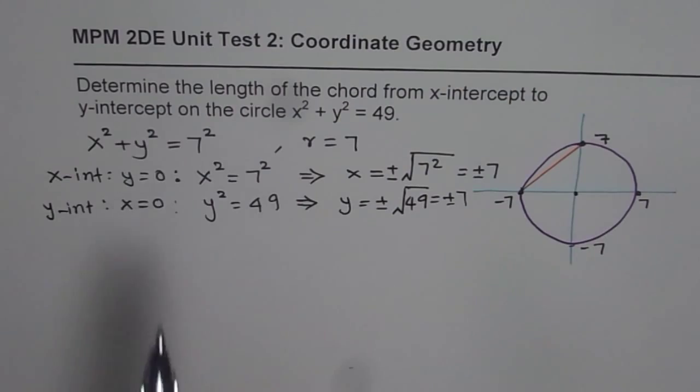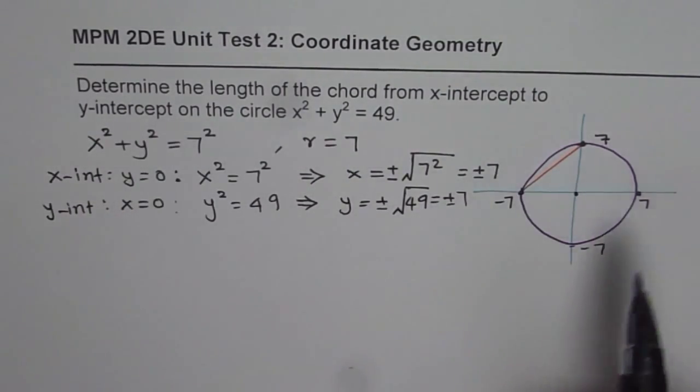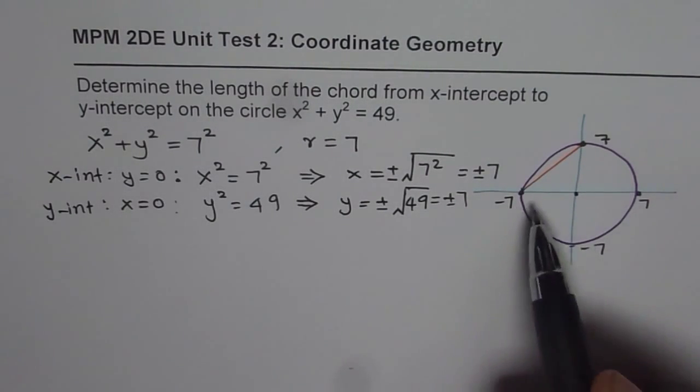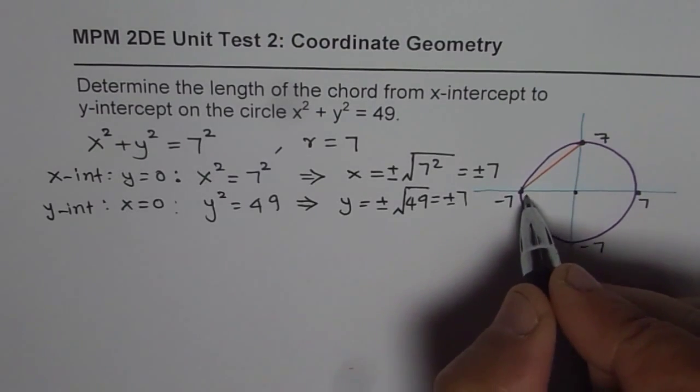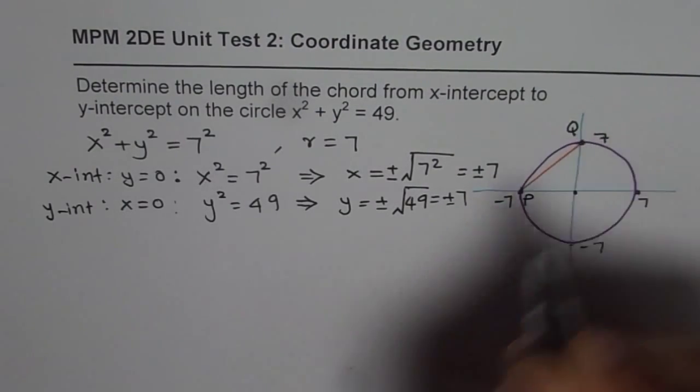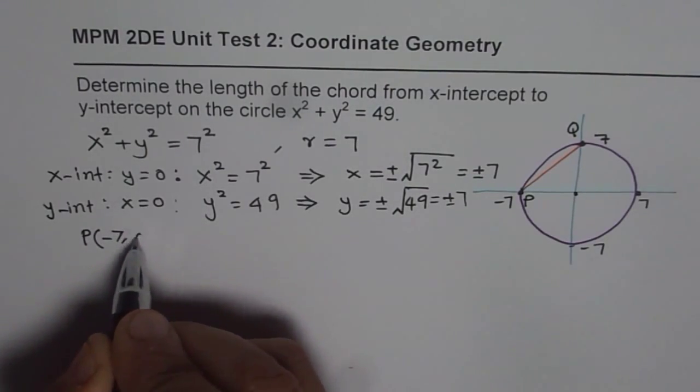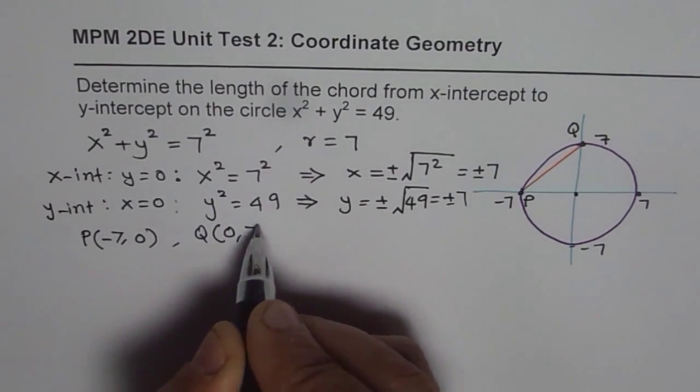Now, let's determine the length of the chord from x-intercept to y-intercept. From the symmetry, you can select any one of them. So as I have shown, we are selecting these two points. Let me call these points as P and Q. Now for me, point P is x-coordinate -7, y is 0 and point Q is 0, 7.